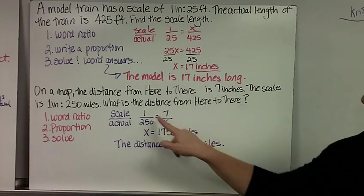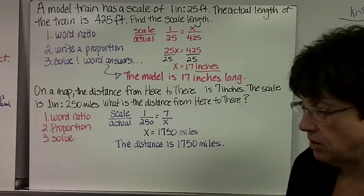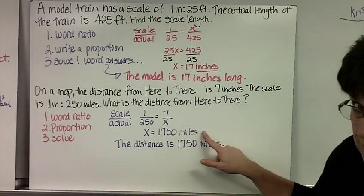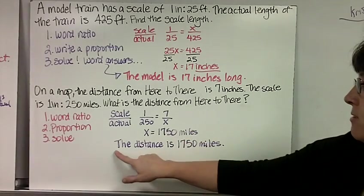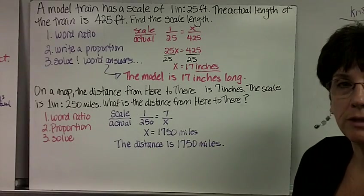So once again, I cross multiply. 1 times x is x. 250 times 7 is 1750 miles, because that's what we were looking for. The distance is 1750 miles.